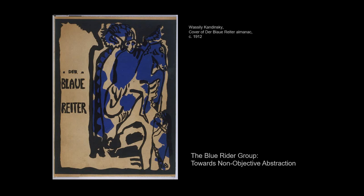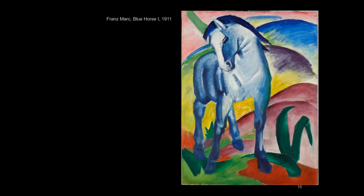The Blue Rider became the name of their movement, and they produced an almanac with a bizarre collection of sources — an article on Cubism, German woodcuts, and also Chinese paintings done in ink washes, very expressive. They were looking for sources that were more inherently expressive and spiritual. For Franz Marc's part, he loved the symbolism of blue horses — there's no such thing as a blue horse, but blue is a spiritual color, so clearly we're looking at some spiritual message.